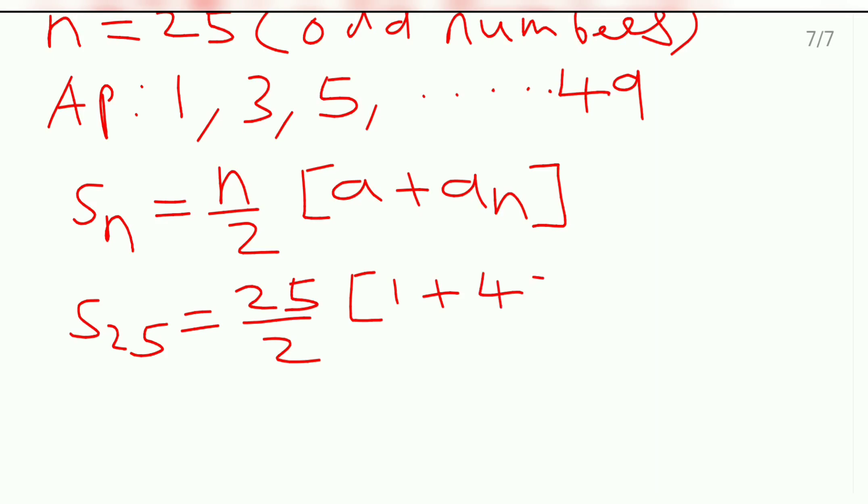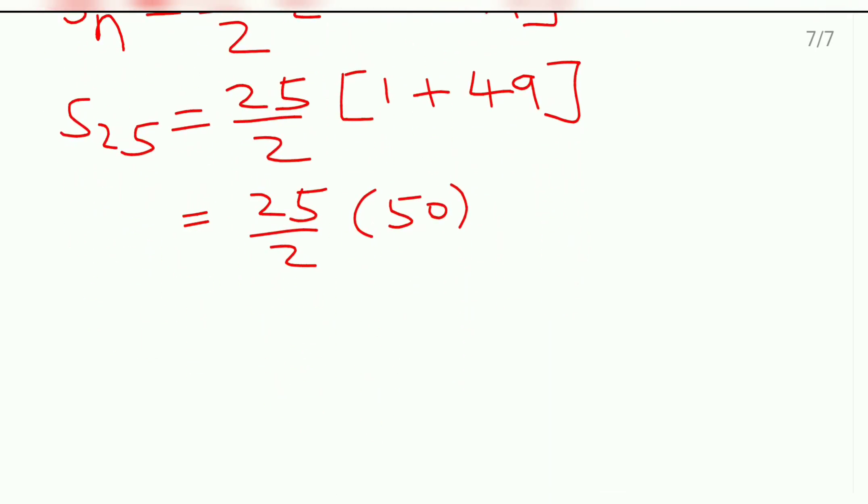Here which is equal to 25 by 2 into 50. Now I'll just cancel it. This one, 25 into 25, 625. It means that sum of first 25 odd numbers is 625.